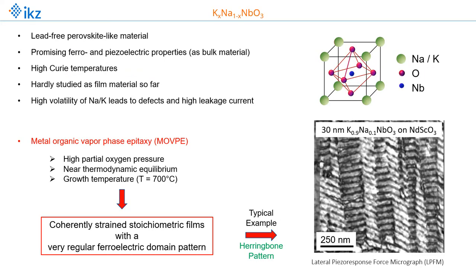Let me first start with the material system potassium-sodium-niobate. It's a lead-free, perovskite-like material with promising ferro- and piezoelectric properties already as bulk material. It exhibits high Curie temperatures but has been hardly studied as a film material so far, because of the high volatility of the sodium and potassium, which may lead to defects and high leakage current.